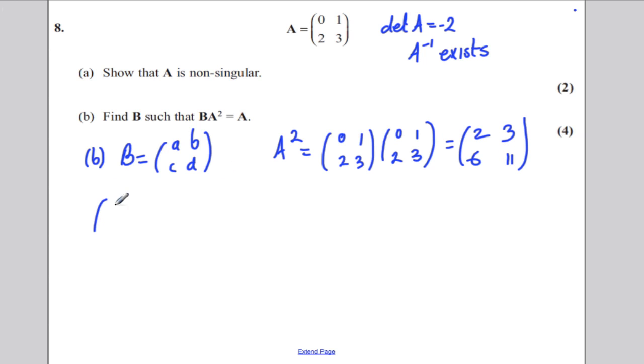Take B as A, B, C, D. Multiply it by 2, 3, 6, 11, and try to solve the equation where it equals 0, 1, 2, 3. You get four simultaneous equations.